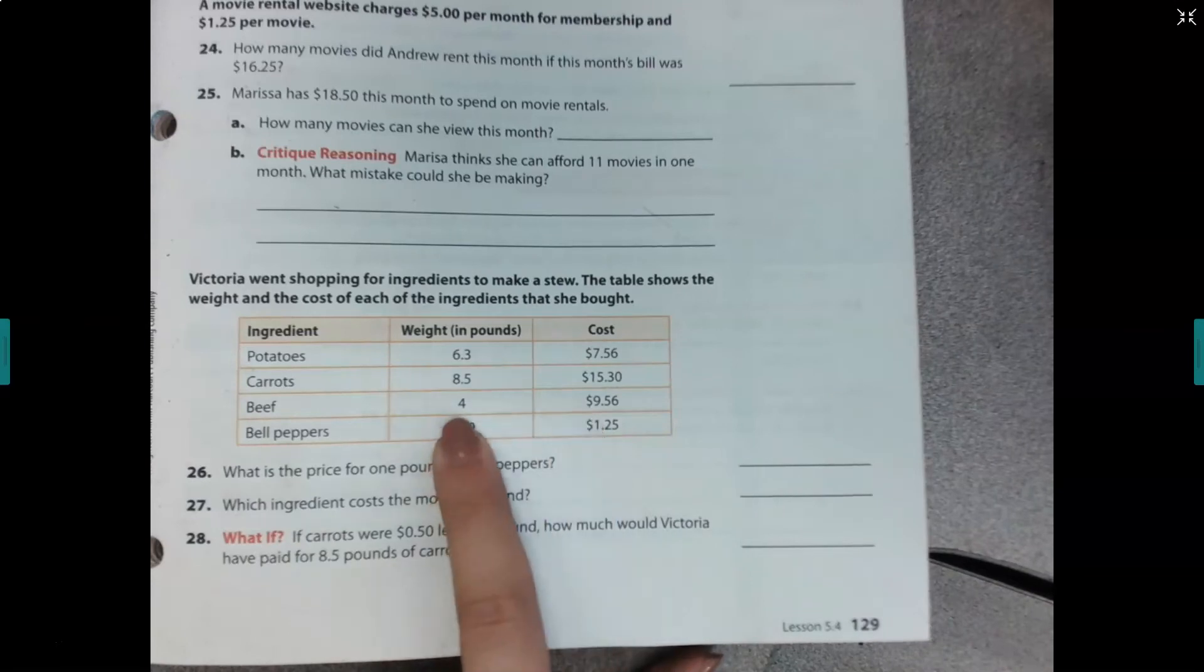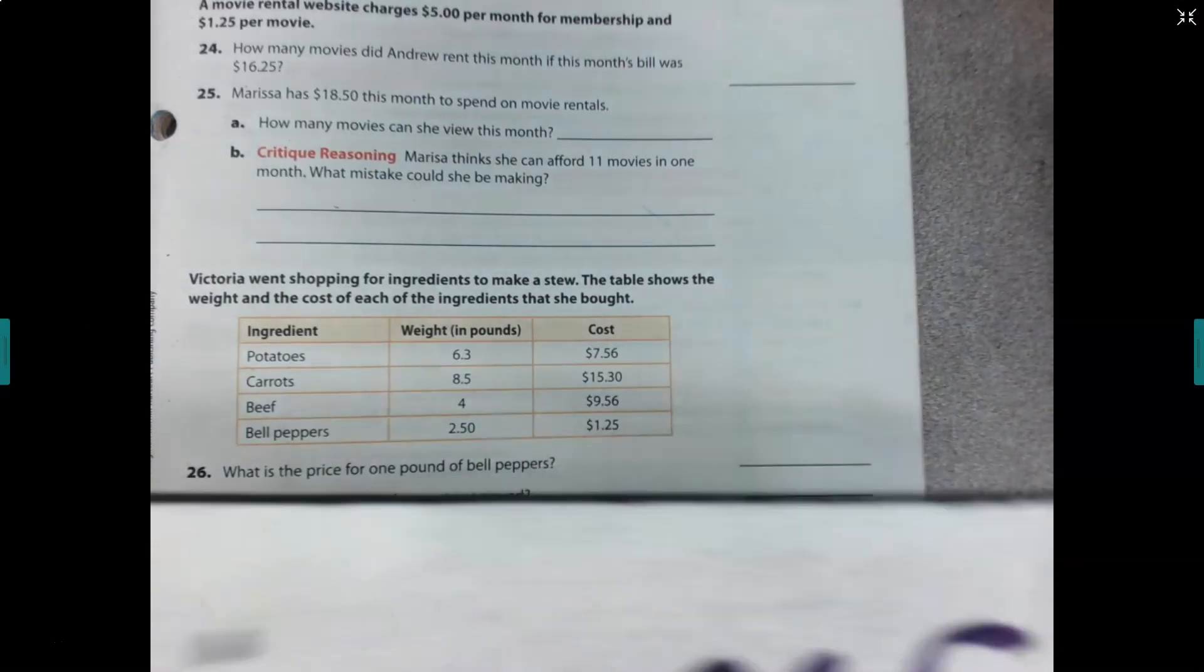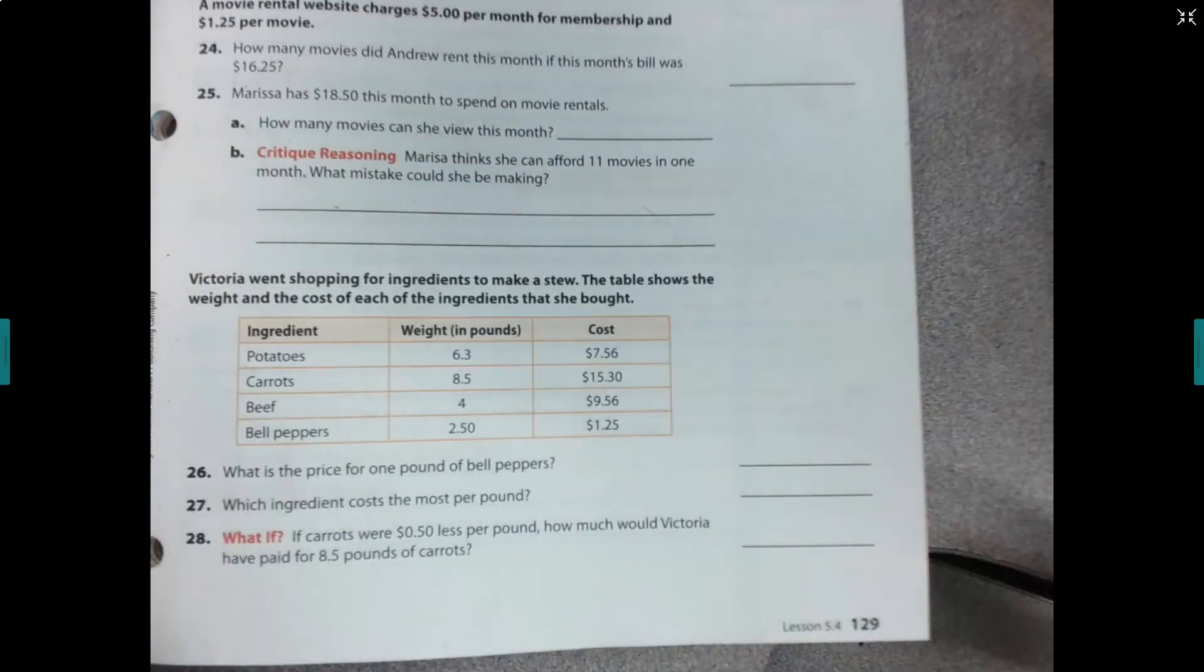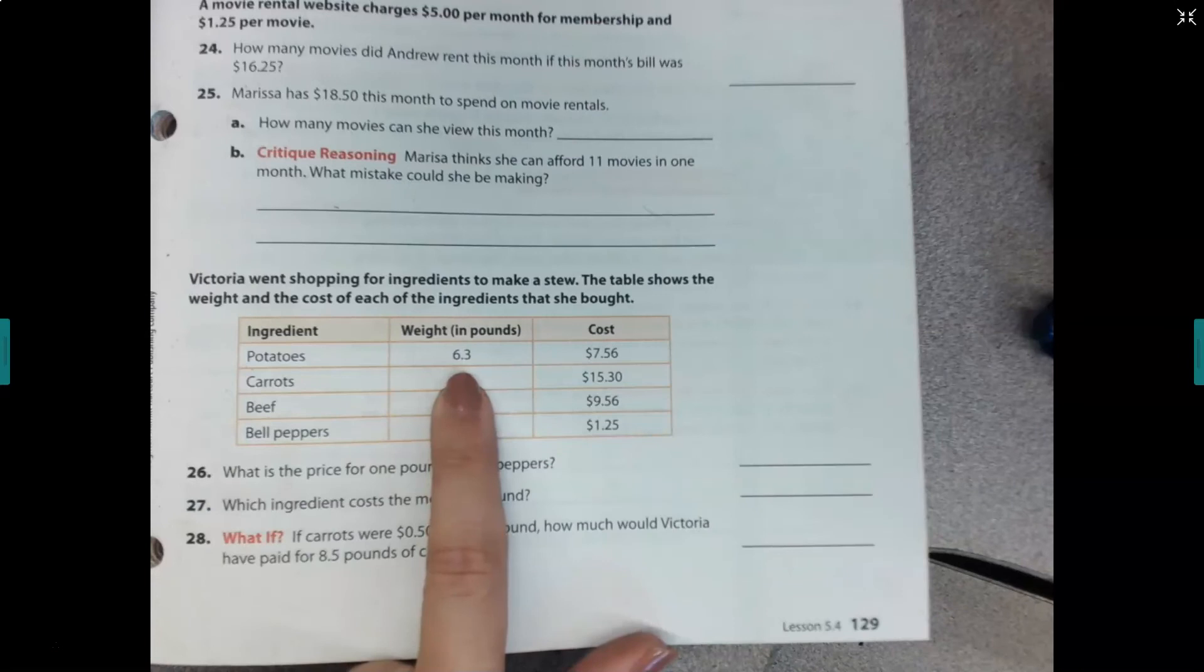If I'm doing a quick estimate here, I could think that the beef is costing about $2 per pound. So I'm going to be dividing here. I'm going to divide. I've got four divided by $9.56 here. For some of these other ingredients, like this, I can tell that it costs more than $1 per pound.